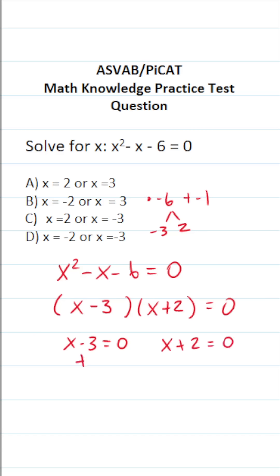To solve for x here, we're going to add 3 to both sides. This crosses out. This says x equals 3. To solve for x over here, we're going to subtract 2 from both sides. This says x equals negative 2.